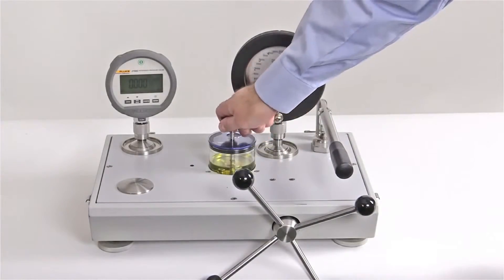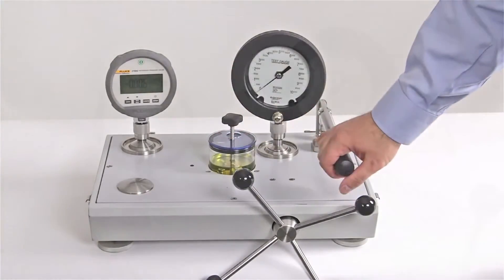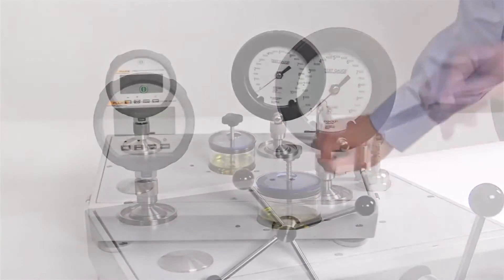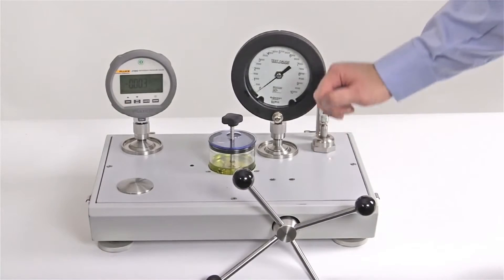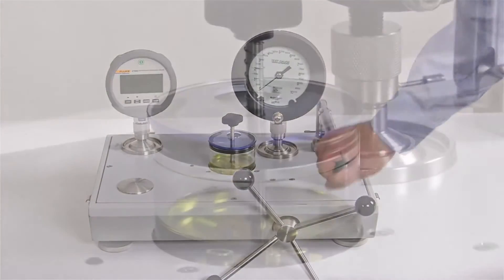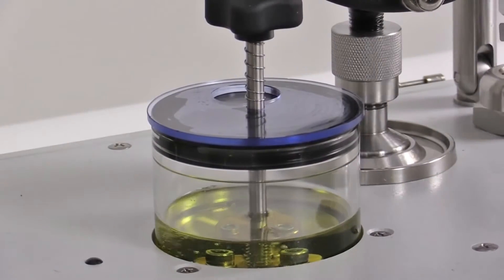With the reservoir valve open, the built-in priming pump can then be used to prime the system. The priming pump includes a check valve system so that the fluid is drawn from the reservoir and pushed through the system. The air in the system is then pushed out through the reservoir.